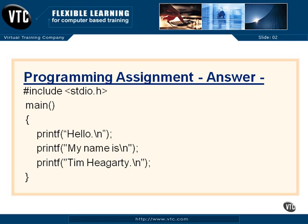So here's our first answer to our programming assignment. There's our little program — we included standard I/O, main is the same. Our hello world printf has been changed to 'hello.' with a new line. The second line, the way I did it, is 'my name is' and then another new line, so that we wind up on the next line down, and then my name and another new line. Pretty simple, but you've got to make sure you get those semicolons in there, you get all the double quotes where you want them, and you use a backslash n and not a forward slash.